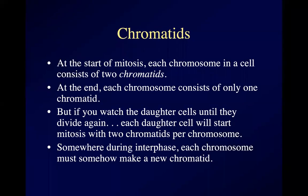If you were to take a freshly divided pair of cells, give them a nutrient broth, and watch them until they started dividing again, each of those cells would have two chromatids per chromosome. So somewhere during interphase — we can't see it — each chromosome somehow sprouts a new chromatid.